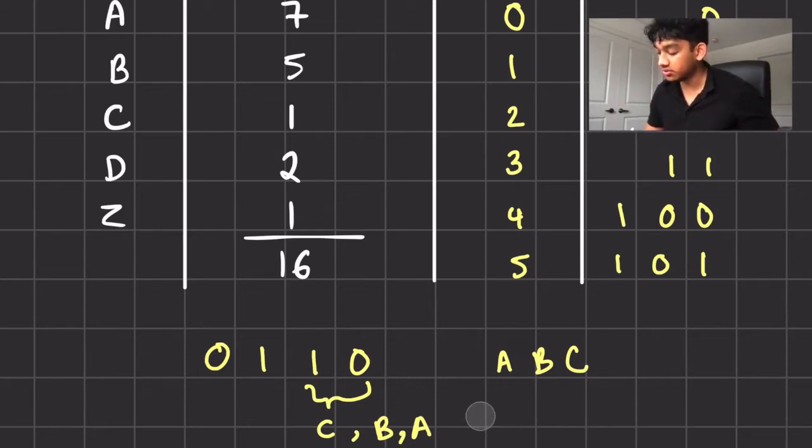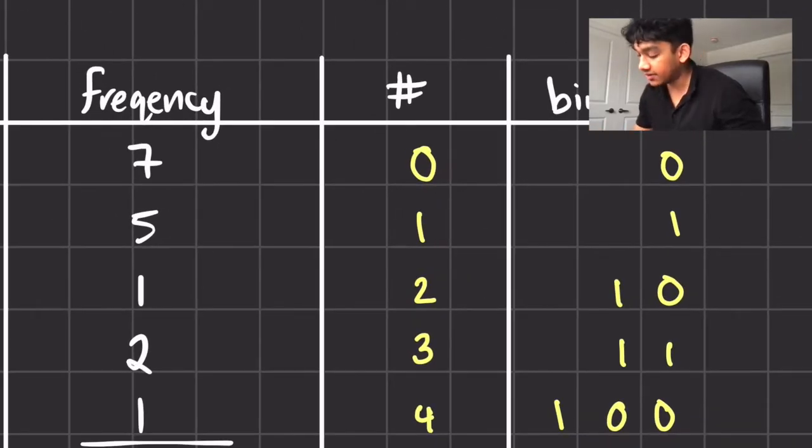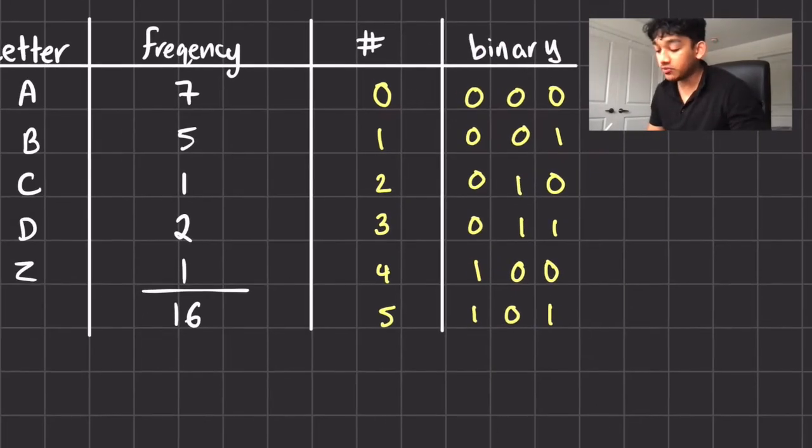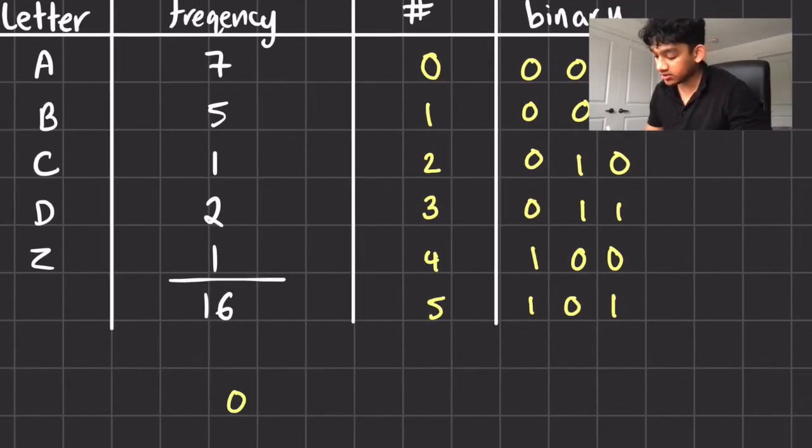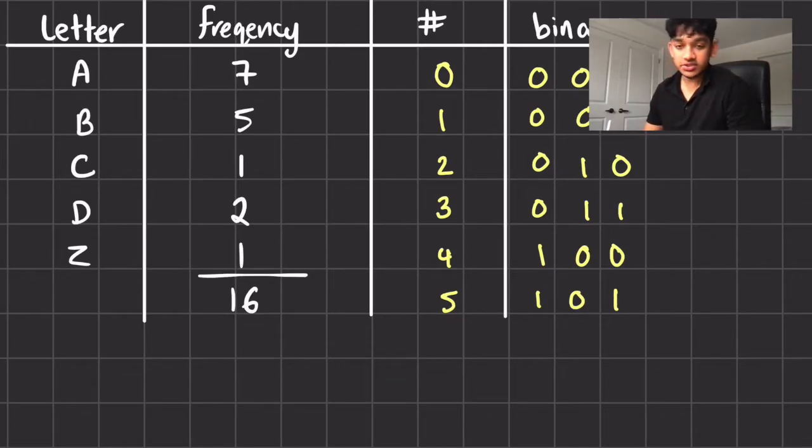So what we do to avoid that is we make sure to have the rest of the bit. So if it's zero, we're gonna have three digits here, so three bits actually. Zero, zero, one, zero, and zero. And now you're gonna notice that if we try to use this, they're gonna be separated by three bits. Now the issue is that even though it's small, it's still not optimal.